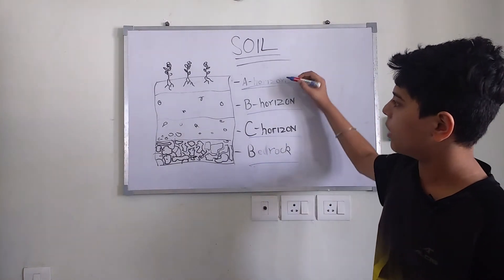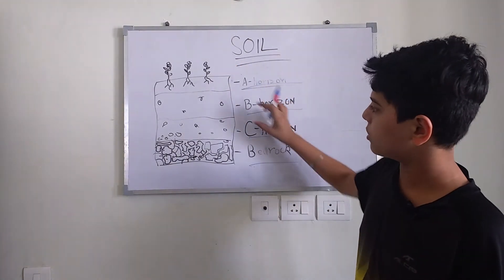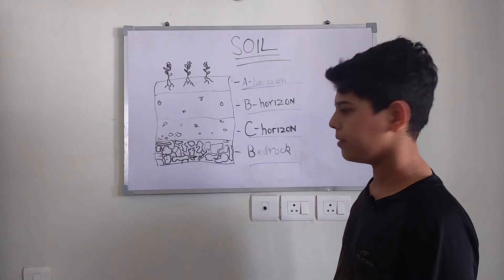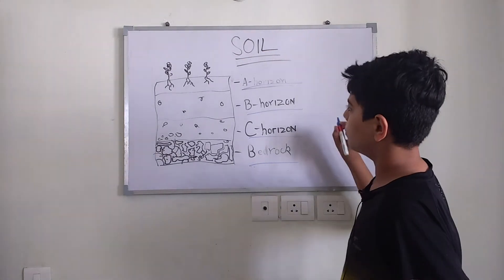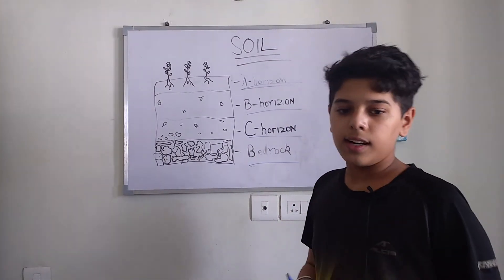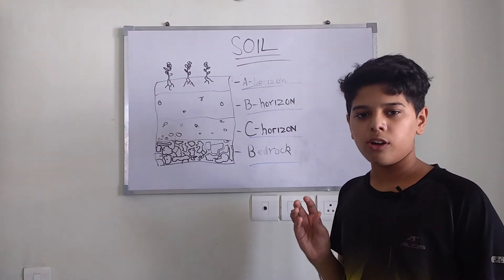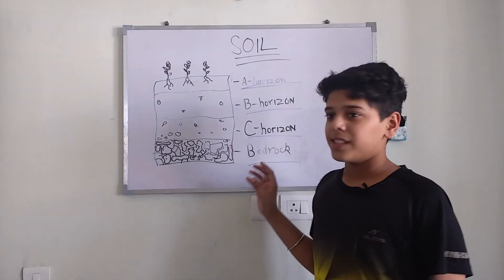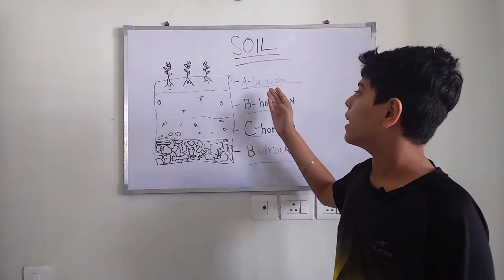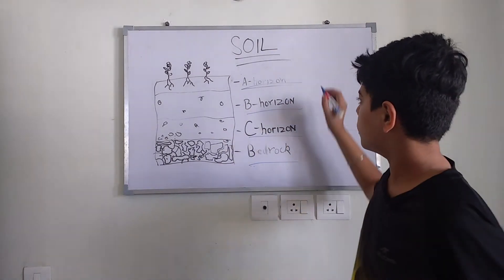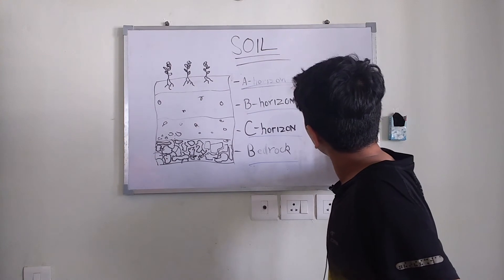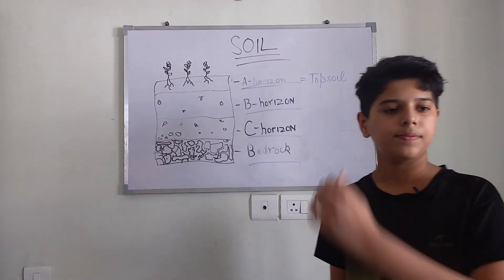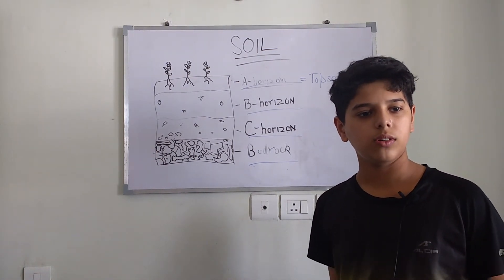To summarize: the A-horizon is the topmost layer, the B-horizon is the second layer, the C-horizon is third. The A-horizon contains very small quantity of rocks and humus in very large quantity. We can say the A-horizon is equivalent to topsoil — they are synonyms, two names for the same thing.